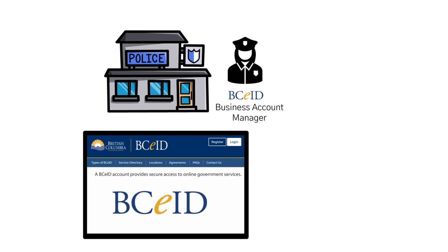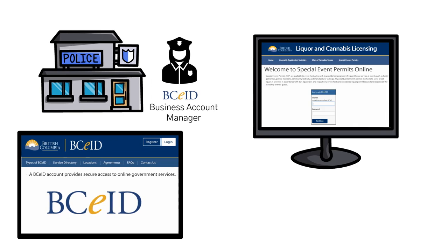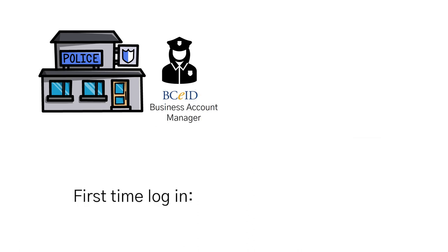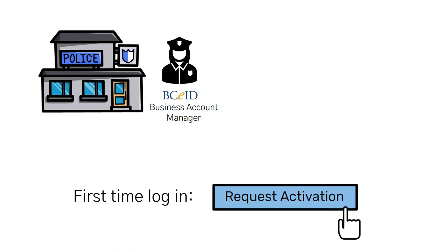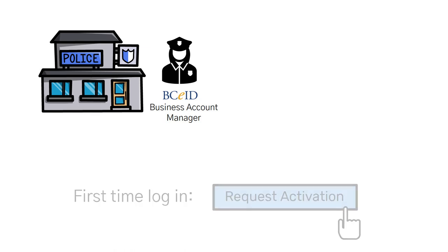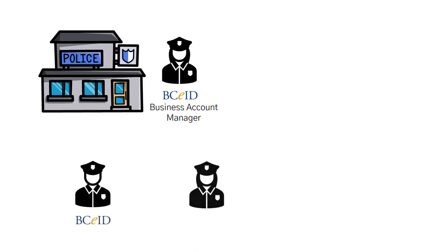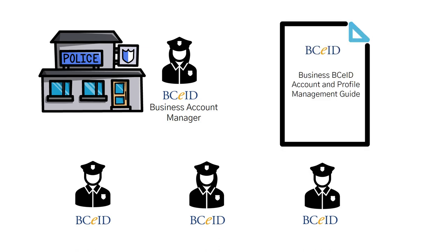Once the Business BCEID account is set up, the Business Account Manager will use those BCEID credentials to log into the LCRB Licensing Portal. When the Business Account Manager sets up their account in the Licensing Portal for the first time, they must click on the Request Activation button in the dashboard before they can begin working in the Licensing Portal. The Business Account Manager will also set up Business BCEID access for individual police users, as each police user who will review special event permit applications must have their own Business BCEID login credential to use the Licensing Portal. More details on this can be found in the Business BCEID Account and Profile Management Guide.